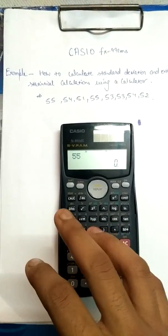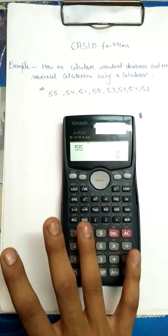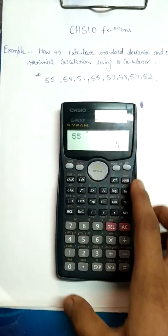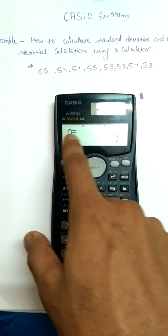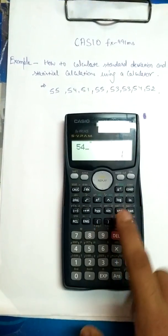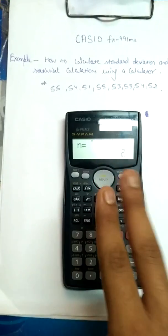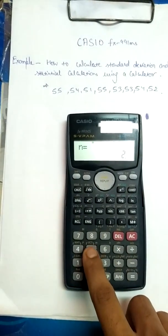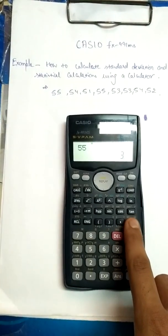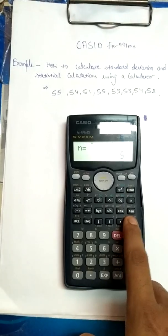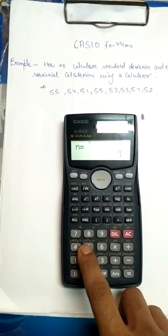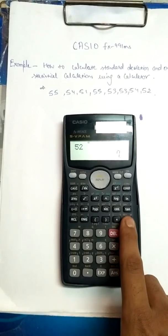Now I'll insert all the data into the calculator. The first value is 55. To insert each value you press M+; the screen shows N=1, meaning I've inserted my first number. Then 54 and M+, N=2. Then 51 and M+, that's the third. Then 55 for the fourth, 53 for the fifth, 53 for the sixth, 54 for the seventh, and 52 is the last one.